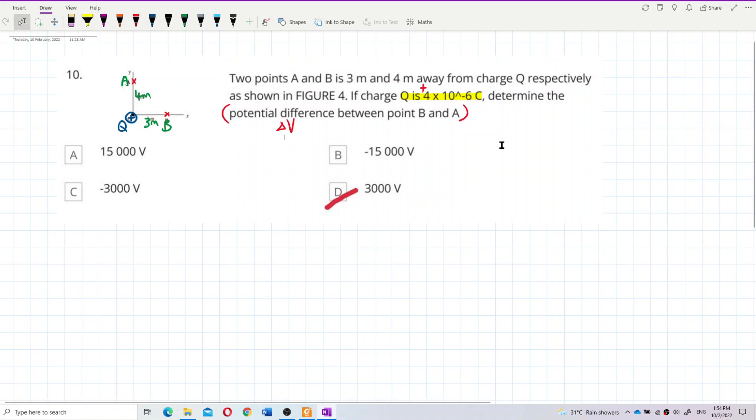Look at the sequence, B and A. So delta V_BA, follow the sequence. You must follow the sequence. B and A means BA.